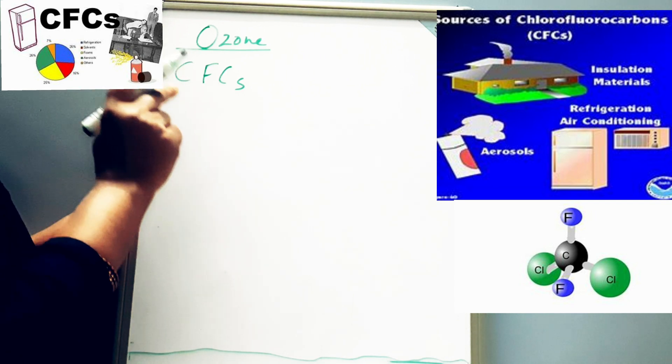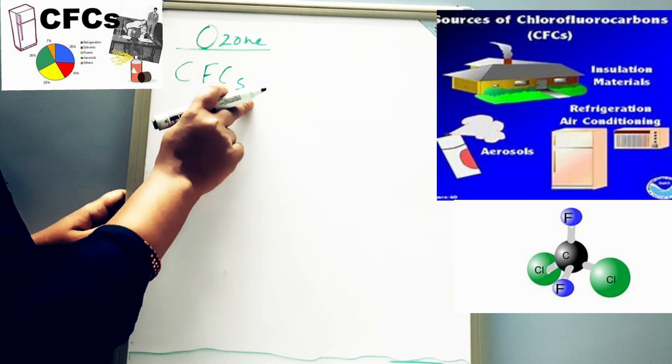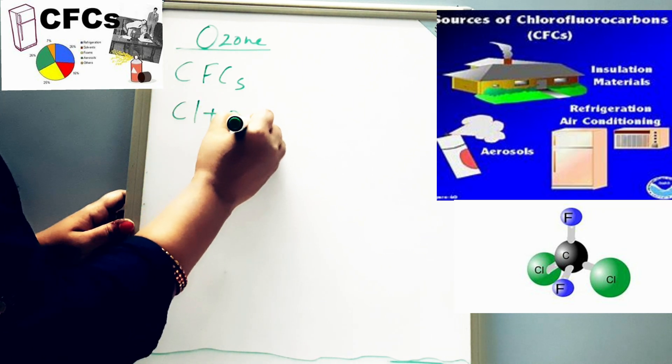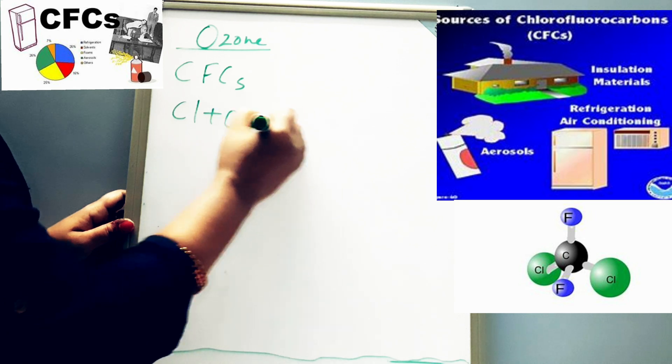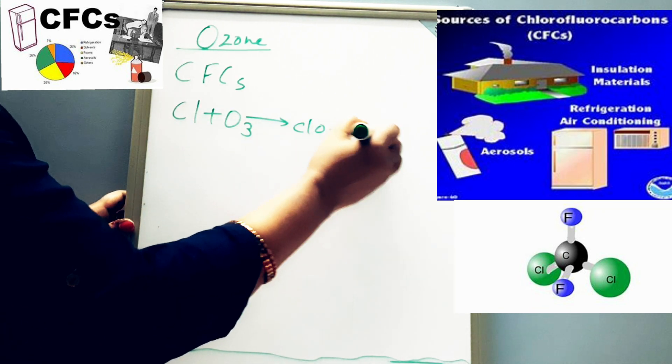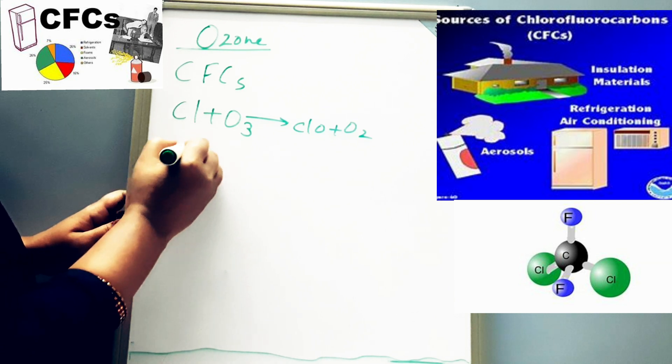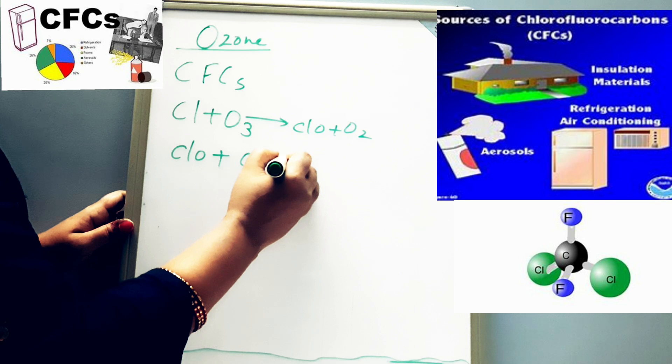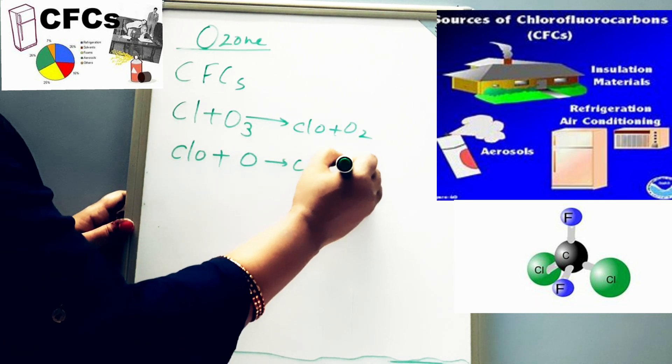So now we'll see it through reactions. Chlorine of CFC combines with ozone with the help of sunlight and forms ClO + O₂. Then further what happens: this ClO combines with nascent oxygen and forms Cl + O₂.